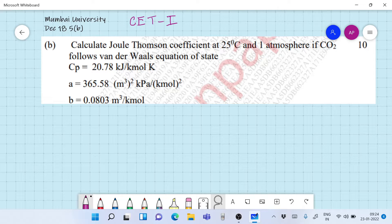Calculate the Joule-Thompson coefficient at 25 degree Celsius and 1 atmosphere if CO2 follows the Van der Waals equation of state. Now the Cp is given to you, and A and B values of CO2 are given to you.